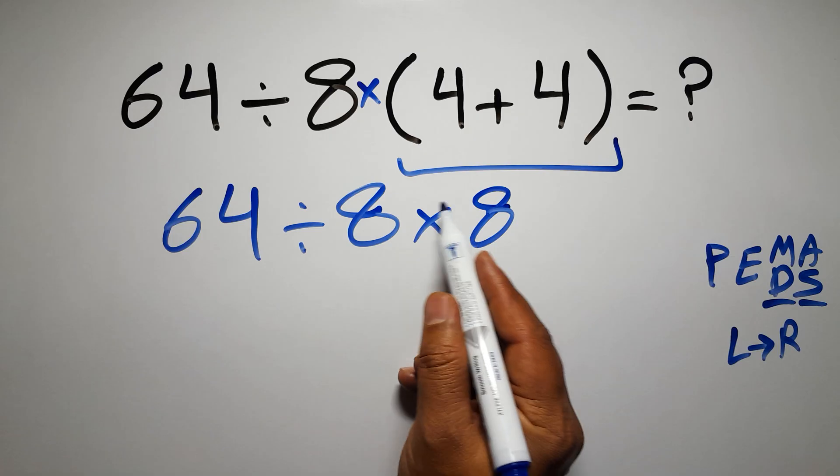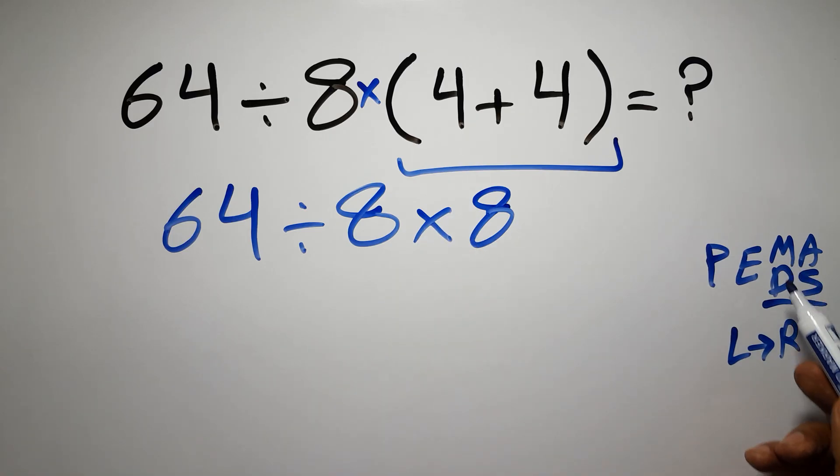Now we have one division and one multiplication. As I said, multiplication and division have equal priority, and we have to work from left to right.